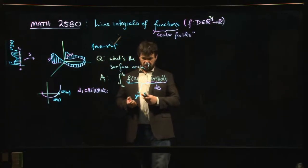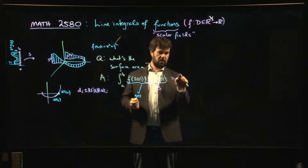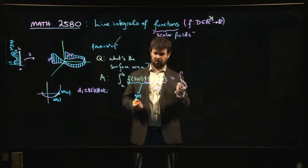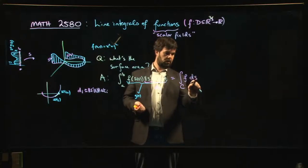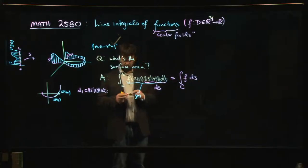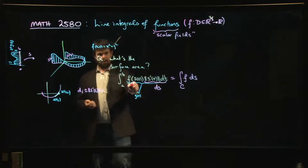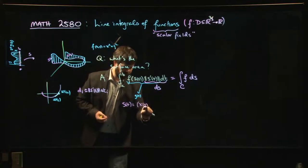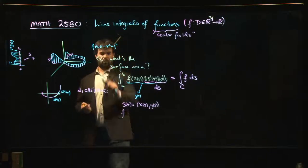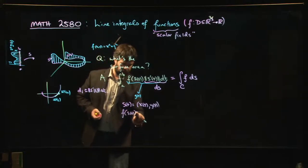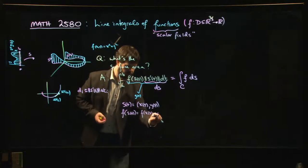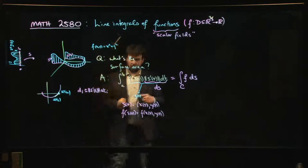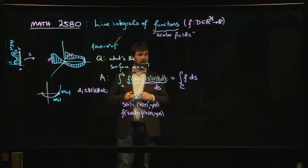The way you typically write this is: the integral from a to b of f(s(t)) times the length of s′(t) dt. You'll also see it written as the integral over C of f ds, where C denotes the curve. To clarify: if the parameterization is s(t) = (x(t), y(t)), then f(s(t)) is just shorthand for f(x(t), y(t)).